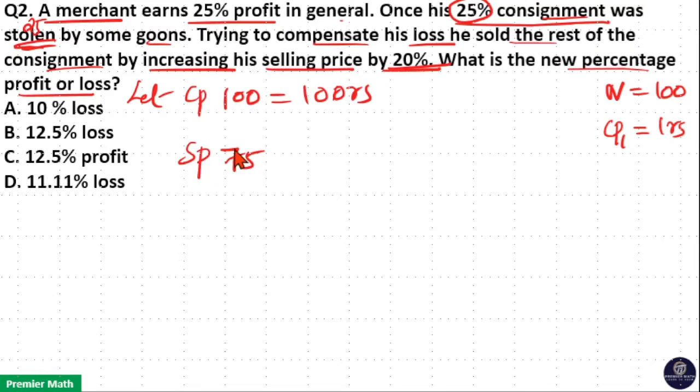So selling price of 75 units is equal to... At normal rate, he will sell this consignment at 25% profit. So 75 into 25% profit means...